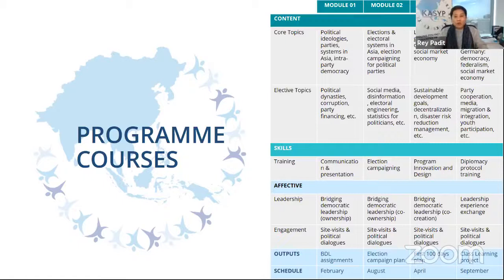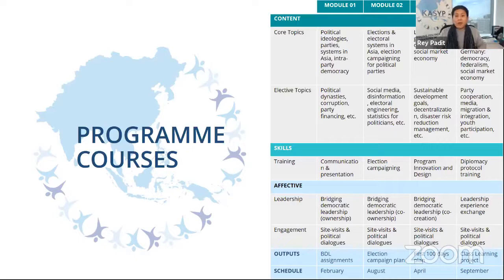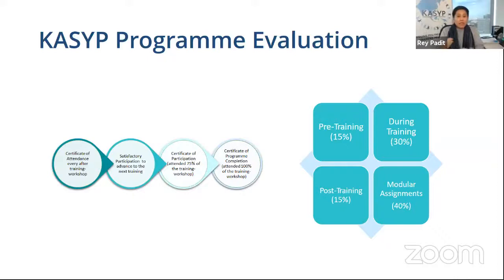The schedule usually starts in February of the following year. For CASIP batch 2021 to 2022, we start around February or March, followed by the next module in August, then April of the next year — that would be 2022 — and then September we end the whole CASIP program for one batch. While CASIP may not be an academic program, it is a rigorous training and capacity development program with a specific program evaluation process.